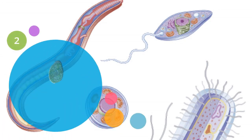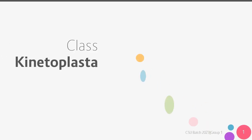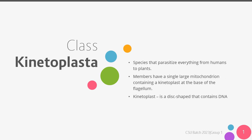Let's start with Parasitic Protozoa. Under Protozoa, we have several more classifications. Under this is a class called Kinetoplasta. The name derives from its characteristic kinetoplast. The species under this class will parasitize anything from humans to plants. They have a single large mitochondrion which contains a kinetoplast at the base of its flagellum. A kinetoplast is a dense network of circular DNA inside the large mitochondrion in a disc shape.